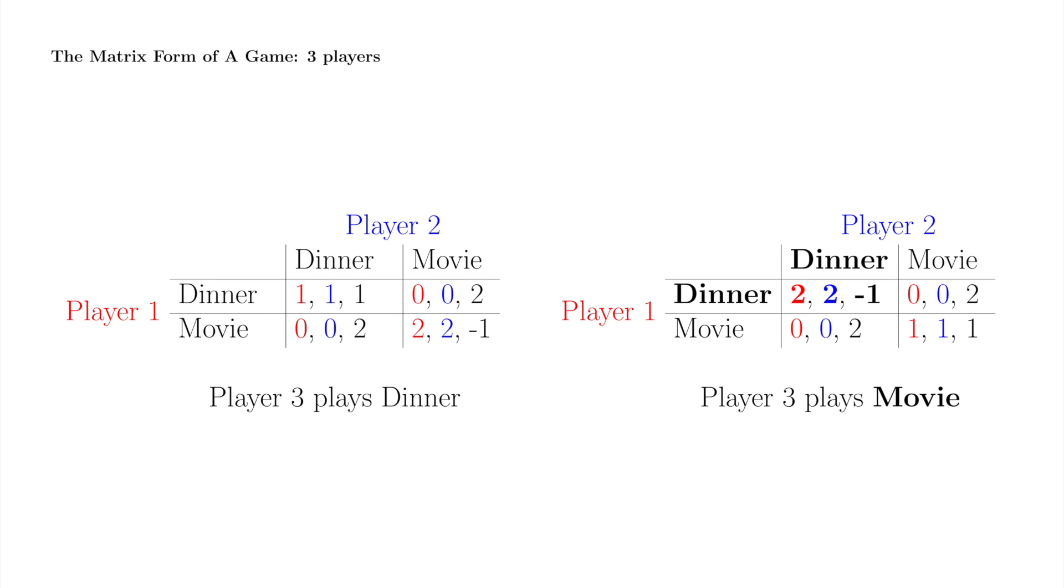More important than player 3's horror at the impropriety of it all, we can see from this example the main drawback of matrices, namely that they become clumsy quickly as the game gets larger. The normal form is much more flexible, and works for all static games of complete information, regardless of size.